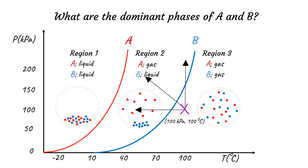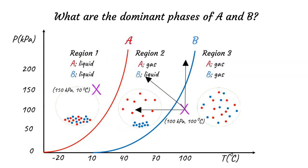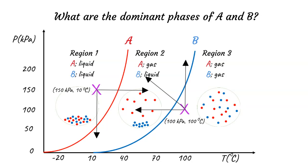Let's consider a different set of initial conditions. Assume that the initial pressure is 150 kPa and the initial temperature is 10 degrees Celsius. Under these conditions we are in Region 1, where both substances A and B are in the liquid phase. Again, we need to get to Region 2, where substances are in two different phases, to separate A from B. There are a few ways to go from Region 1 to Region 2: by increasing the temperature while the pressure is constant, by decreasing the pressure while the temperature is constant, or by increasing the temperature and decreasing the pressure.